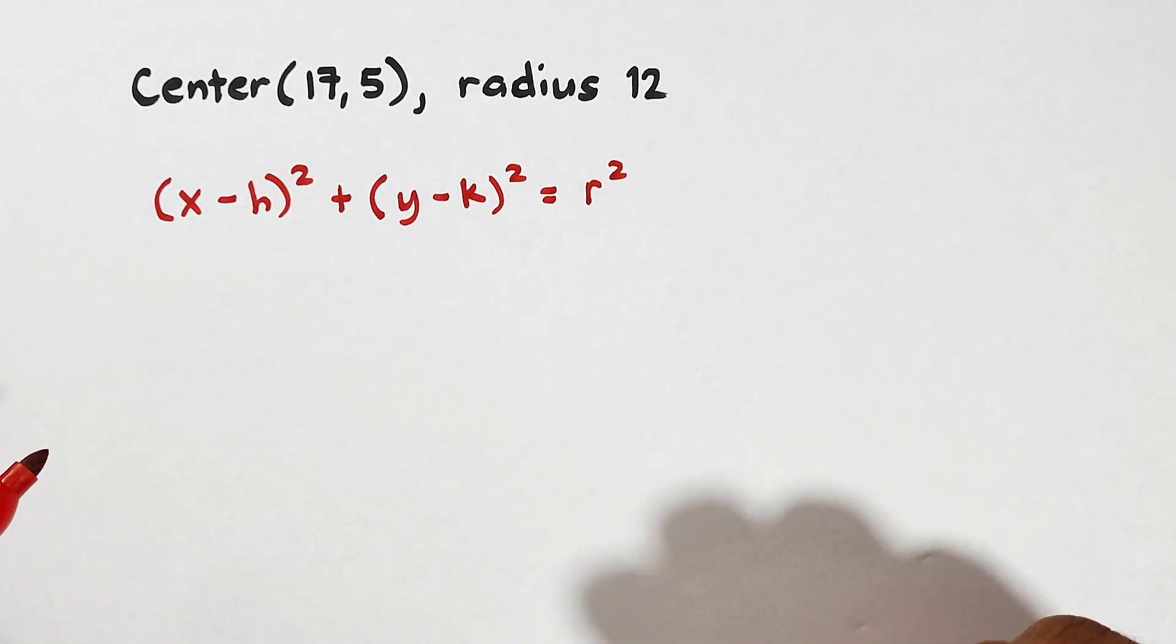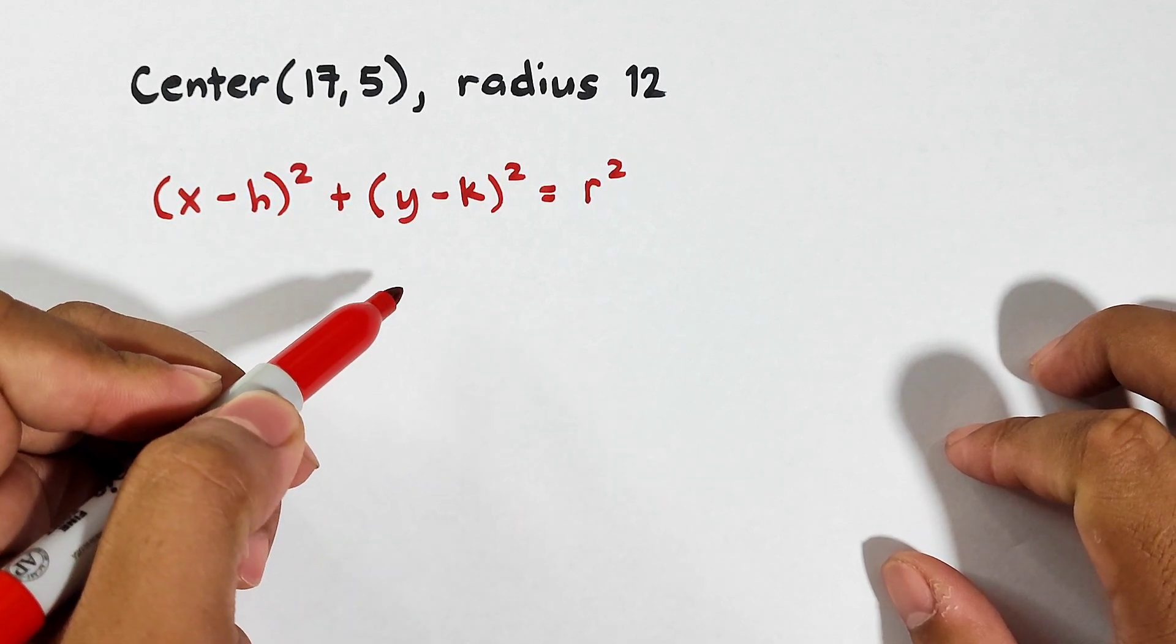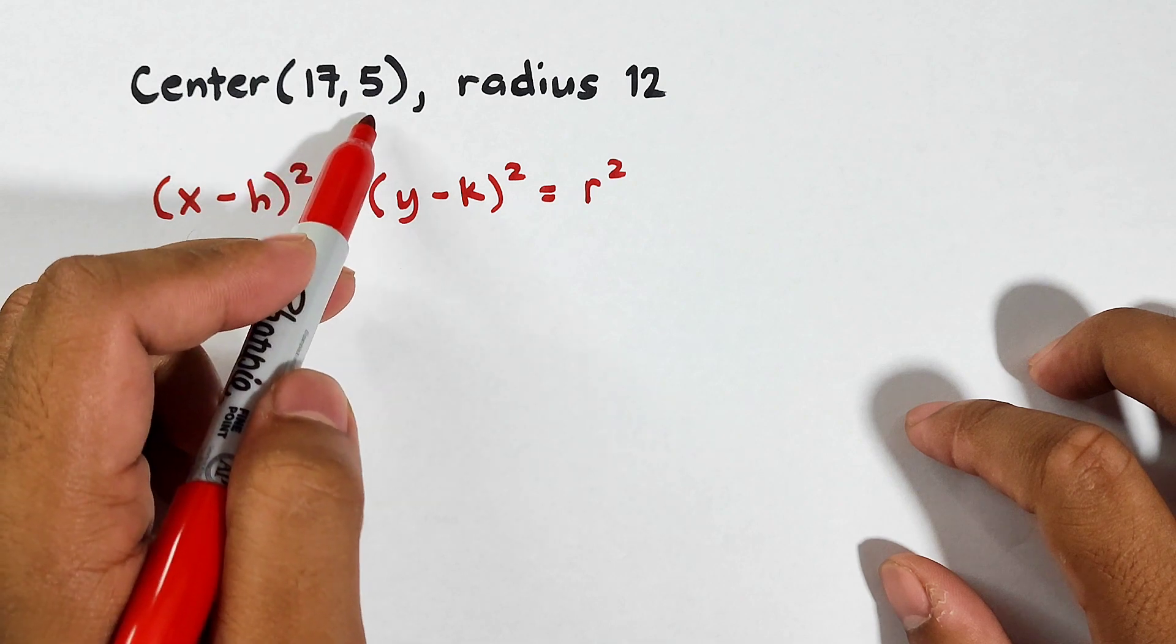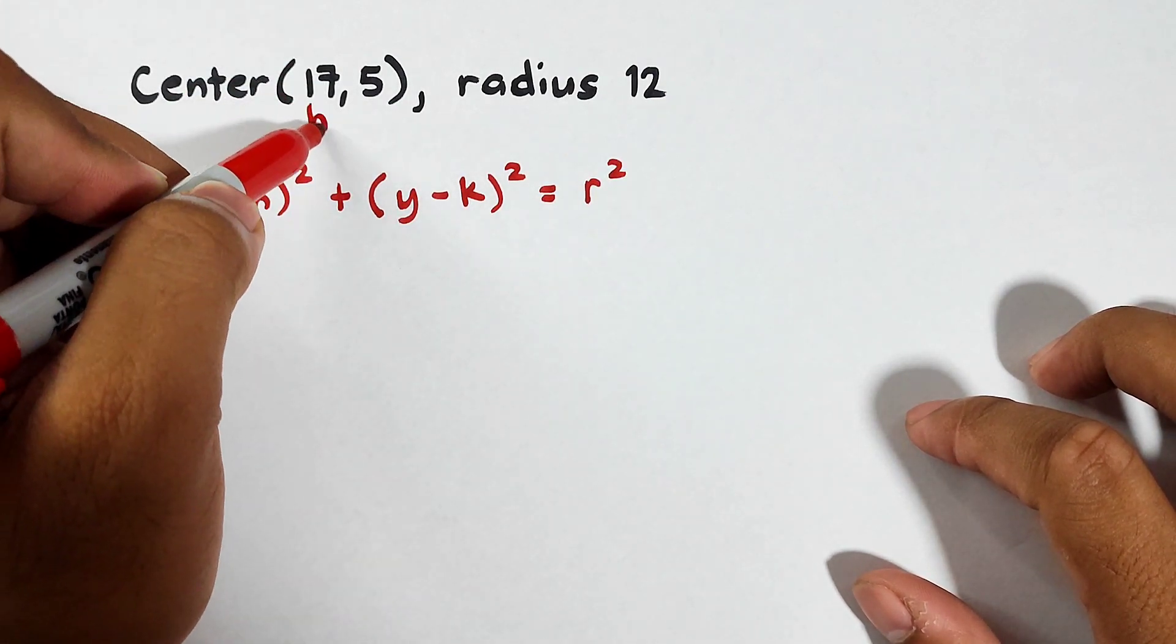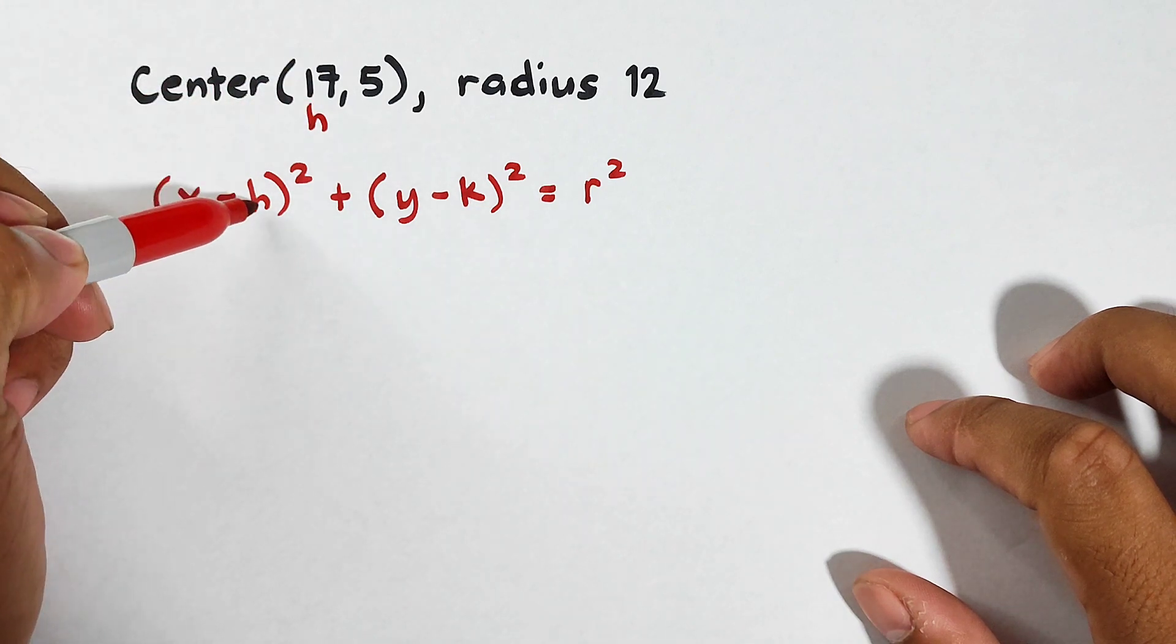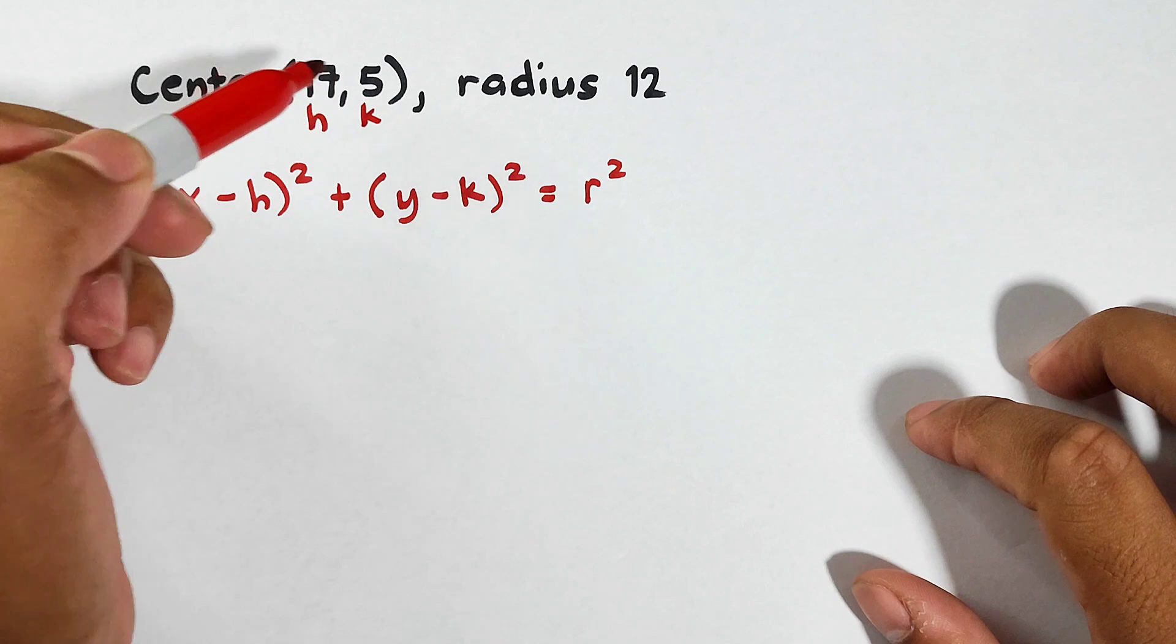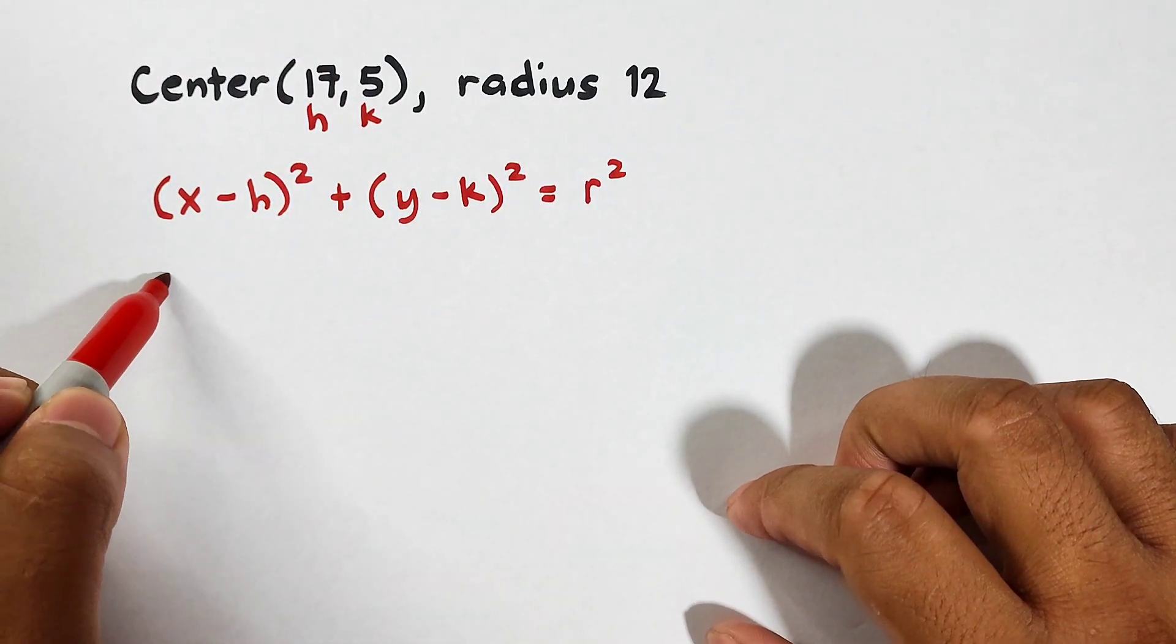Now this example is fairly easy. First, don't replace x and y because it will serve as the variable of the circle. Now, as for the 17 and 5, this is our center. The 17 will represent your h. Your k is represented by 5. So let's replace these now.